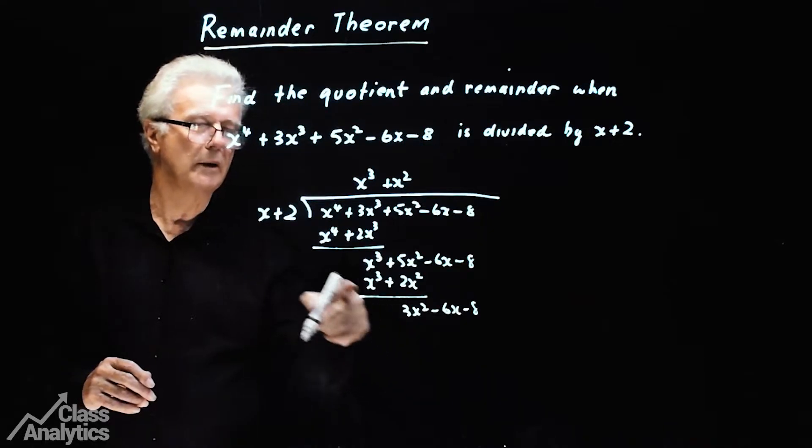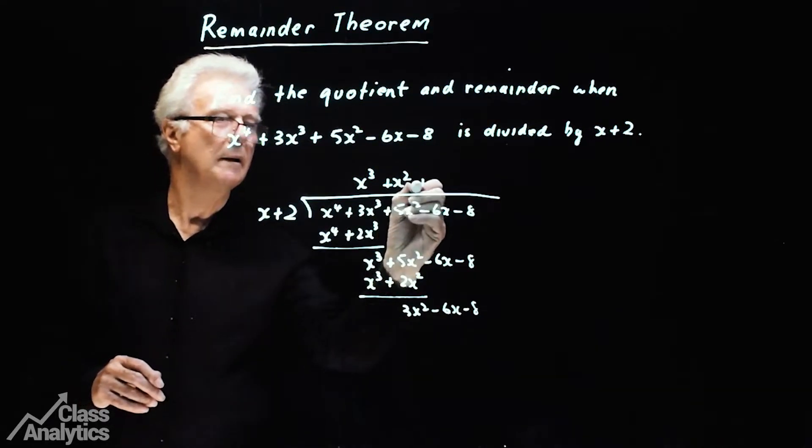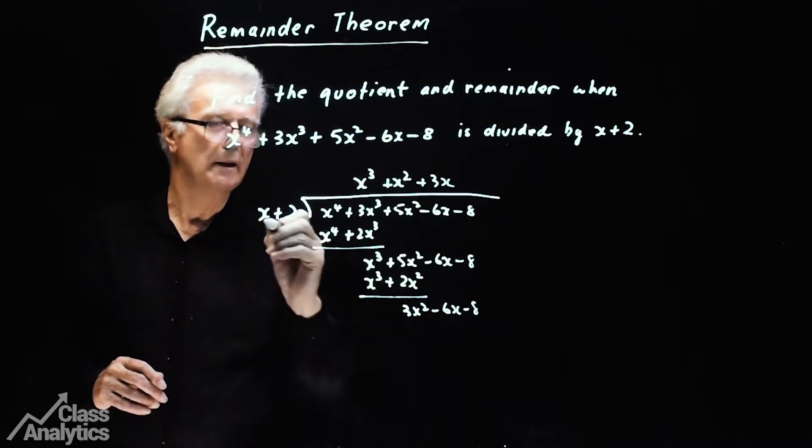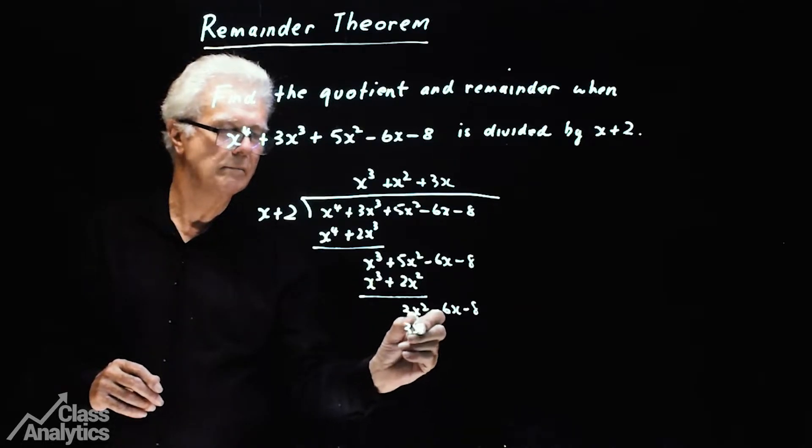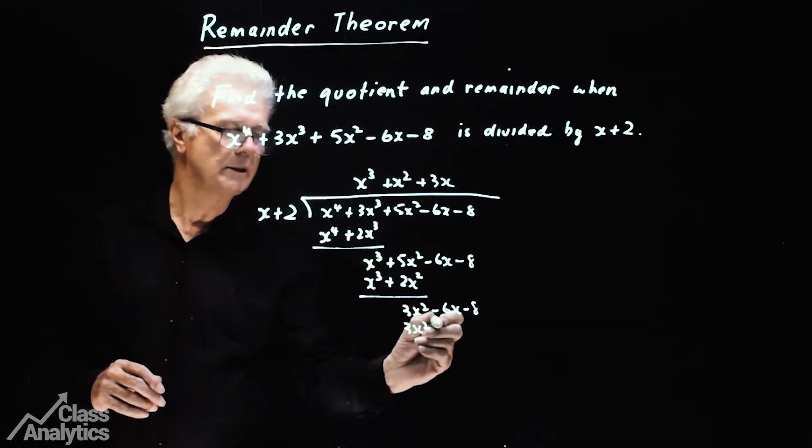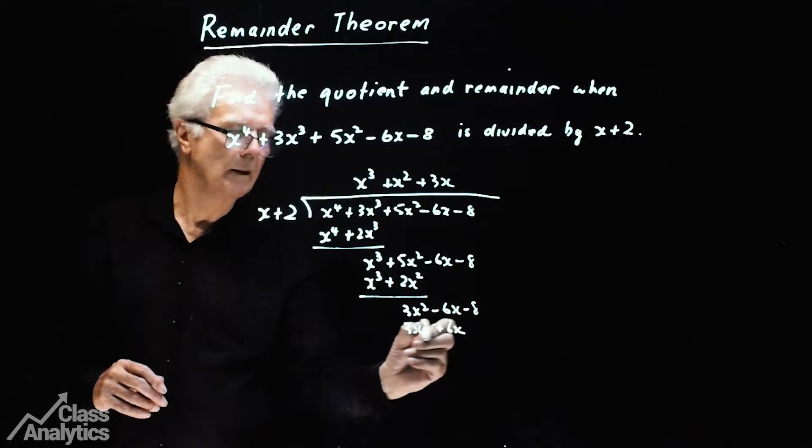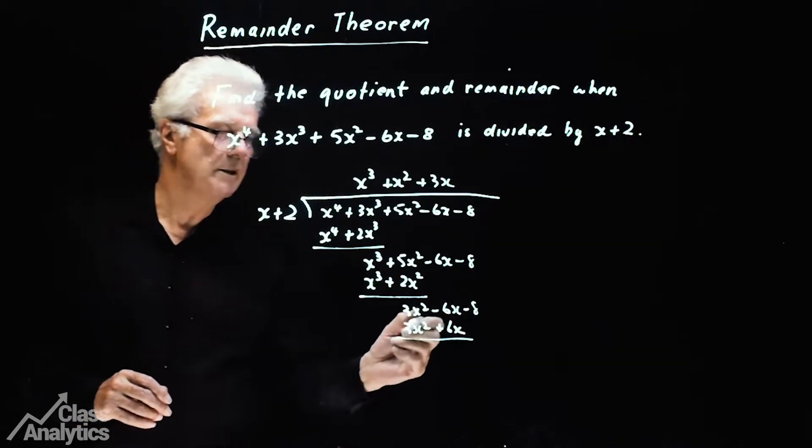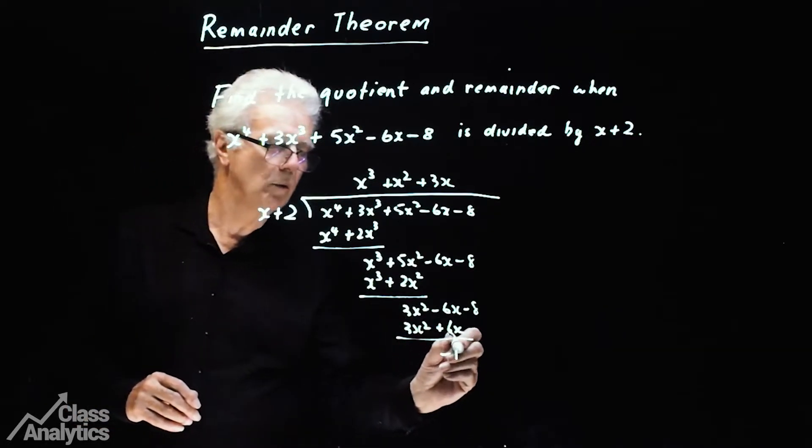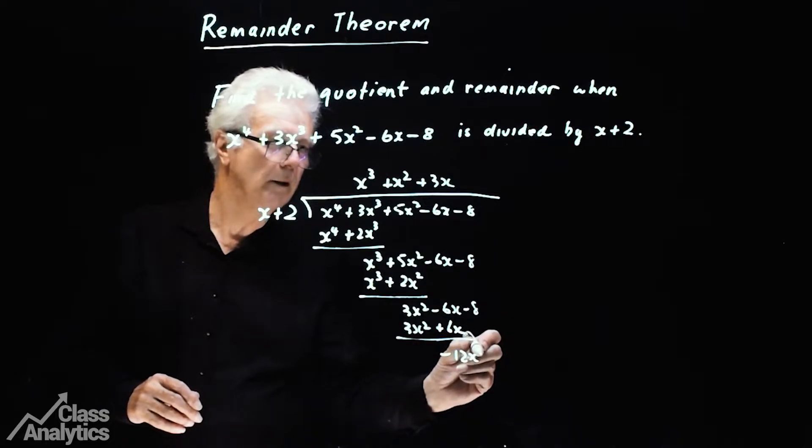I need a 3x squared, so I'll multiply this by 3x, plus 3x goes here. x squared times 3x, that will give me 6x. Okay, now we subtract these and we're going to get minus 12x, bring this down, minus 8.